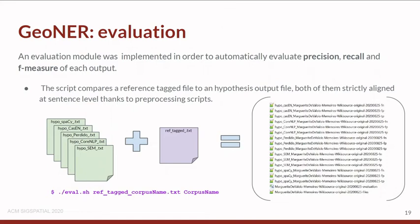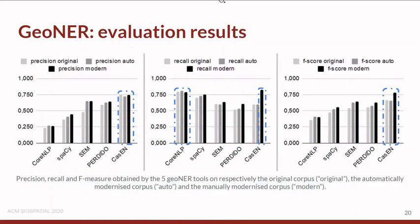We also get a CSV file summarizing the evaluation results, and finally another file with the description of every file used to calculate our evaluation. After applying the general evaluation script, we got the first results for the five tools. We observed that Kazen gets the best results for precision, CoreNLP and Kazen get the best results for recall, and Kazen gets the best F-measure score for manually modernized text.